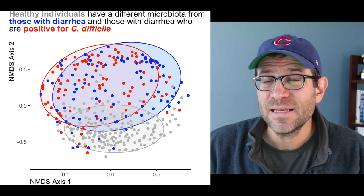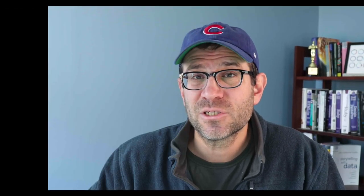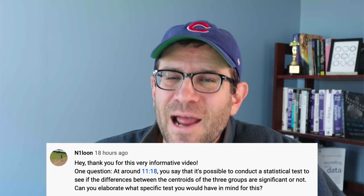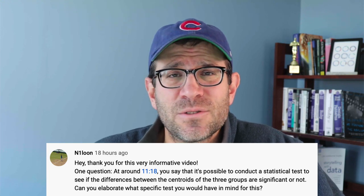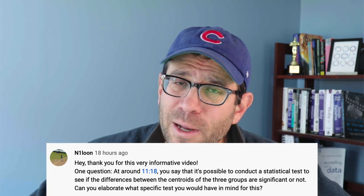For the past few episodes of Code Club, we've been making an ordination, trying to improve its appearance, and trying to make it easier for our audience to read and understand. I've been saying that the three different treatment groups that I see in the visual are significantly different from each other. Someone in the comments on a recent episode actually called me on that and said, you said there's a way to test whether or not those three groups are significantly different from each other — how would we go about doing that?